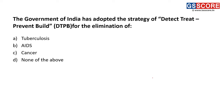First question: the government of India has adopted the strategy of Detect, Treat, Prevent, Build — DTPB — for the elimination of which of the following diseases? As you must be aware, the DTPB strategy is for the elimination of tuberculosis.